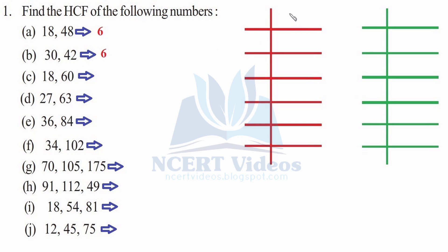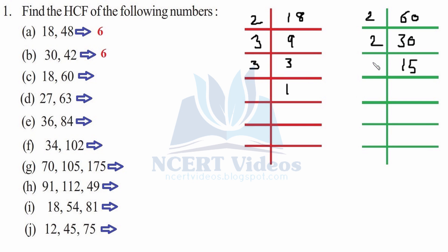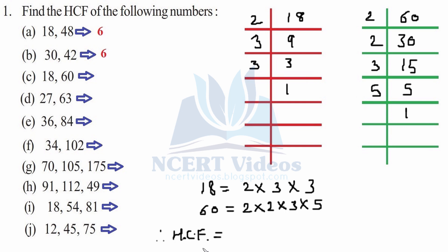Part c: 18 and 60. We will write 18 and 60. Prime factorization of 18: two nines are 18, three threes are nine, three ones are three. For 60: two thirties are 60, two fifteens are 30, three fives are 15, five ones are five. Here 2 and 3 are the common factors of 18 and 60. So again 2×3 gives you 6 as the HCF of 18 and 60. That was your part c.